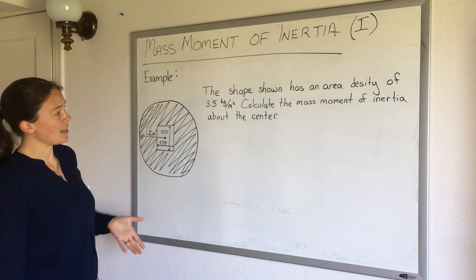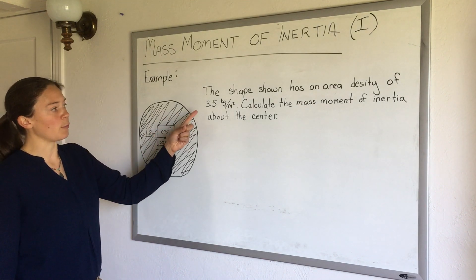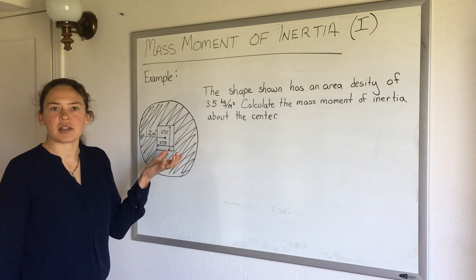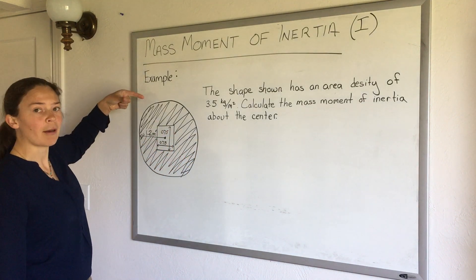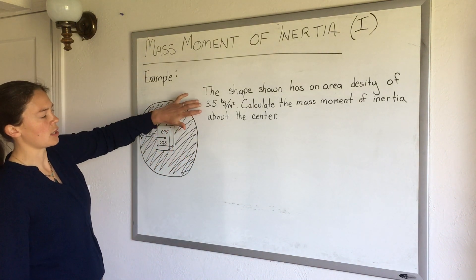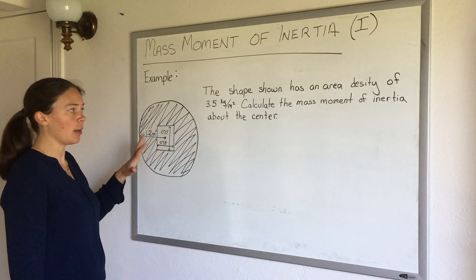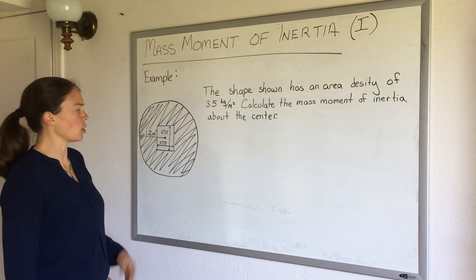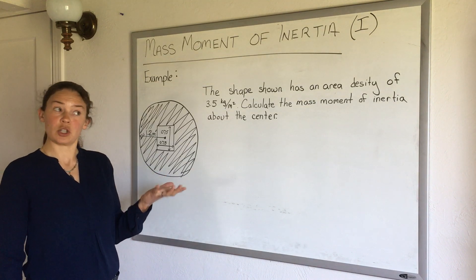And this shape has an area density of 3.5 kilograms per meter squared. We would think about this as meters cubed if we knew that third dimension but we don't, so it's the same just per the area. And it asks us to calculate the mass moment of inertia about this somewhat funny shape.